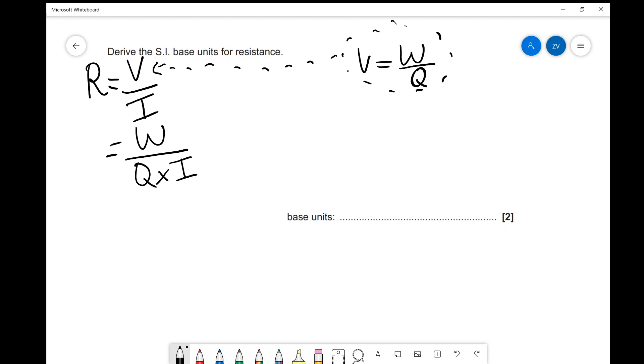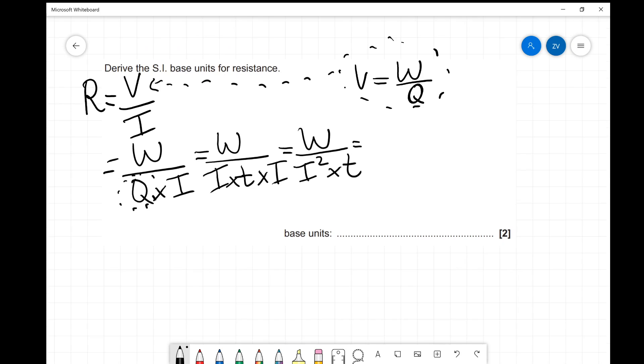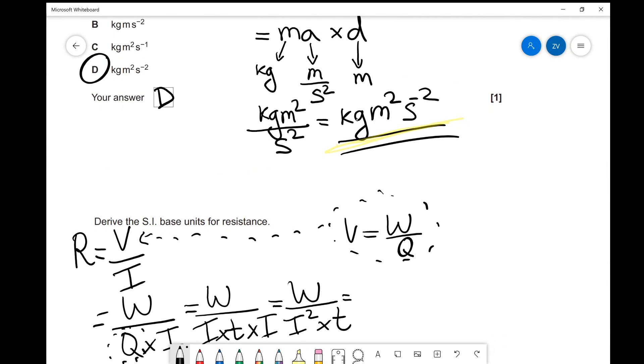Well, let's repeat the same process, but now we also can remember that Q is actually equal to I T. So we can write that down. So it's going to equal to W over I times T multiplied by I. So that's going to equal W over I squared multiplied by T. Perfect. Well, luckily for us, we've just derived the base units for work done.